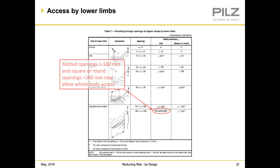One thing to watch: any slotted opening of 180 millimeters, or a square or round opening of 240 millimeters, grants full body access per ISO 13857. If a slot is 240 by 180 mm, or the opening is 240 mm whether square or round, full body access is granted. You need to prevent someone from being able to slide between two pieces of fencing or underneath a fence if it's too far off the floor. ISO 13857 allows a sweep height under the guard of 180 mm, which aligns with ANSI B11.19's seven inches.